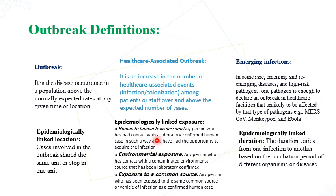There are three categories of exposure: human-to-human exposure (any person who has had contact with a laboratory-confirmed human case), environmental exposure (any person who has contact with a contaminated environmental source), and exposure to a common source (any person exposed to the same common source or vehicle of infection as a confirmed case). The epidemiologically linked duration is important to know — the duration differs according to the type of microorganism and its incubation period.